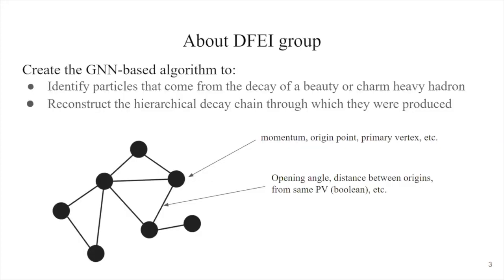This is what the DeFe group does — they actually reconstruct this hierarchical decay chain, and they also identify particles that come from decay of beauty or charm heavy mesons. The way they do this is that they say each proton-proton collision event is a graph where nodes are particles and the edges connecting them are sort of like connections between particles, representing things like opening angle, distance between origins of the particles, or whether they come from the same primary vertex.